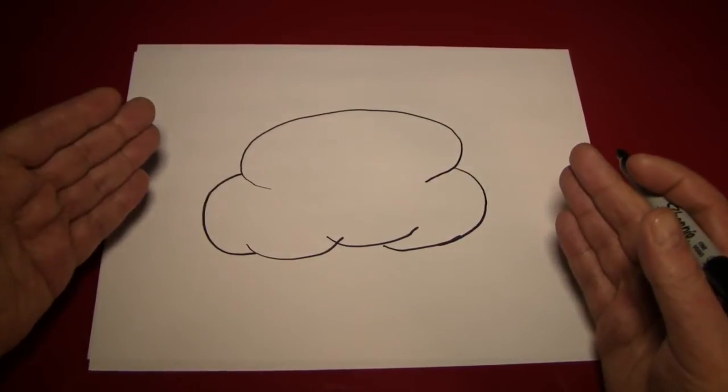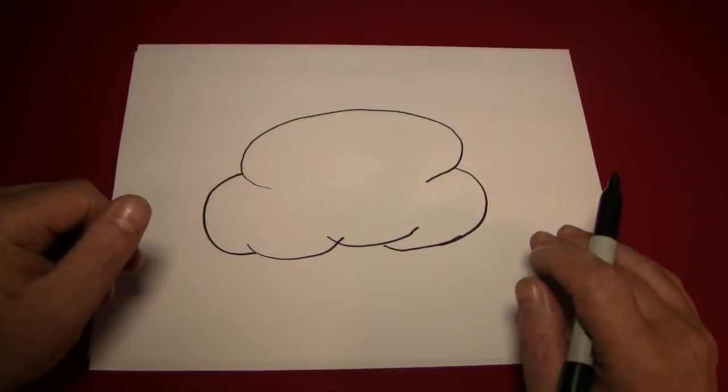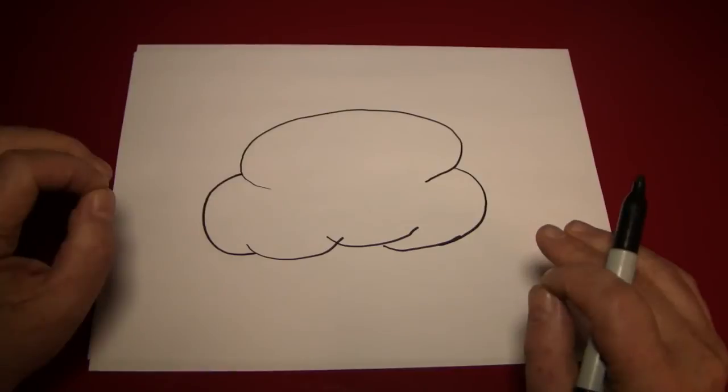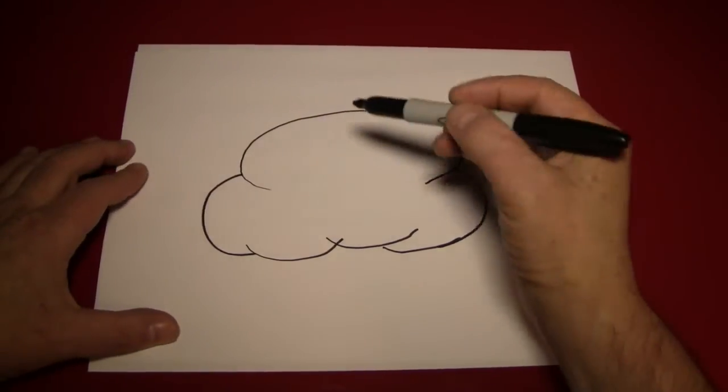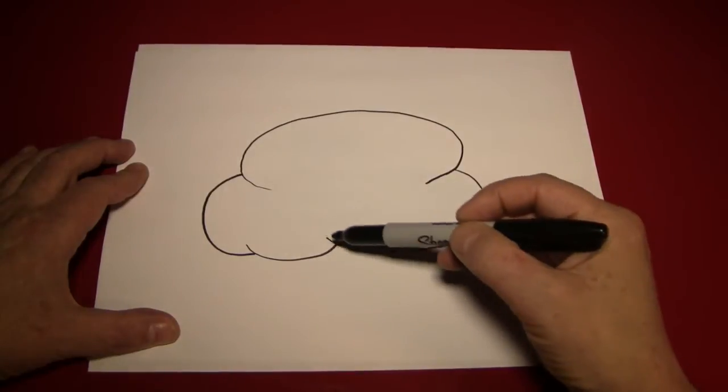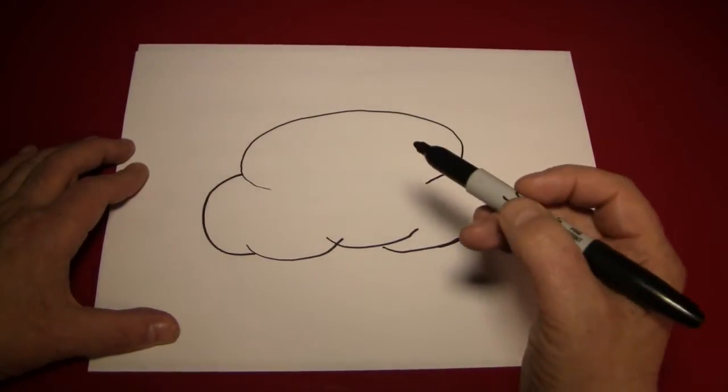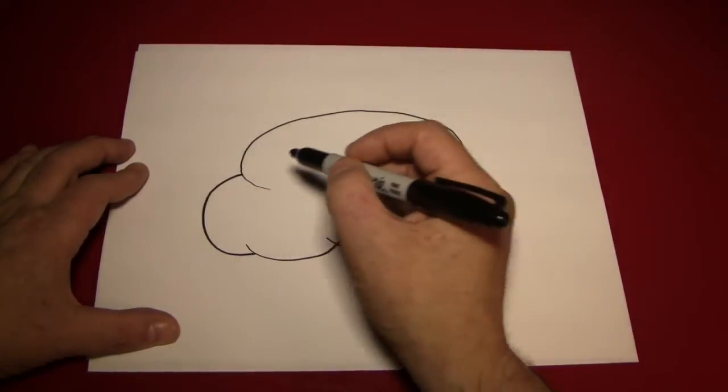Now if yours doesn't look exactly like this, that's fine because it's your cloud. The next thing we're going to do is take all of the left sides of these curves and create shadows to give it some depth.